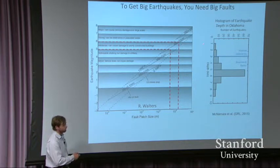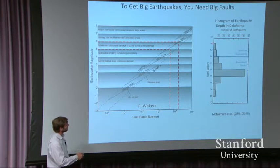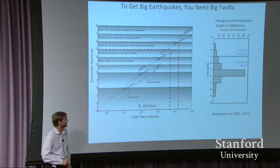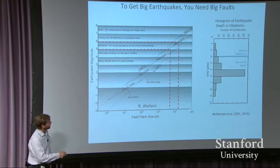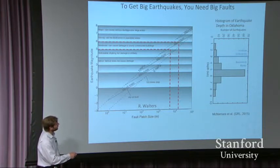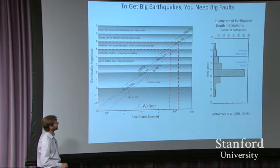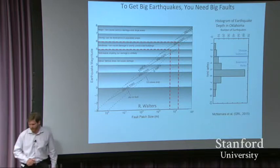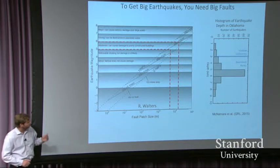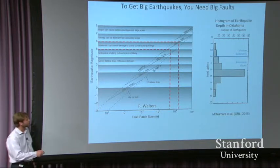In Oklahoma, the basement is at about 3 kilometers depth. We have shallow sediments above, with the Arbuckle as the lowest sedimentary layer, and igneous basement rocks below it. A histogram of earthquake depths in Oklahoma shows the lion's share of earthquakes are between about 5 and 6 kilometers deep — comfortably within the basement. So going forward, if we're going to solve this problem, we need to avoid pressurizing the faults that are in the basement.